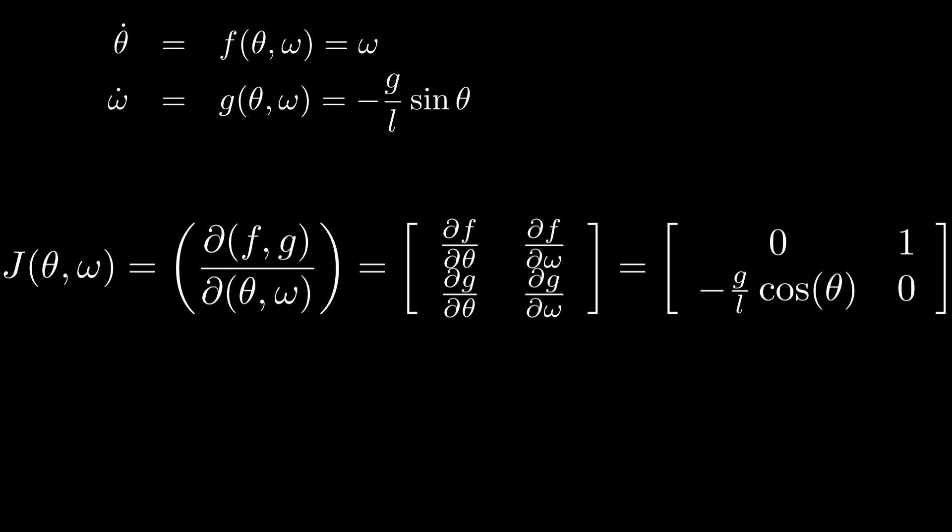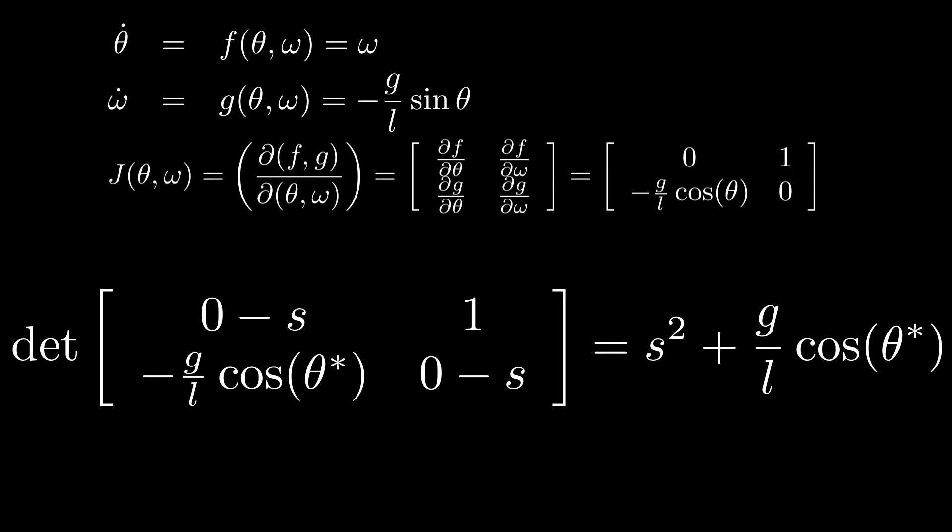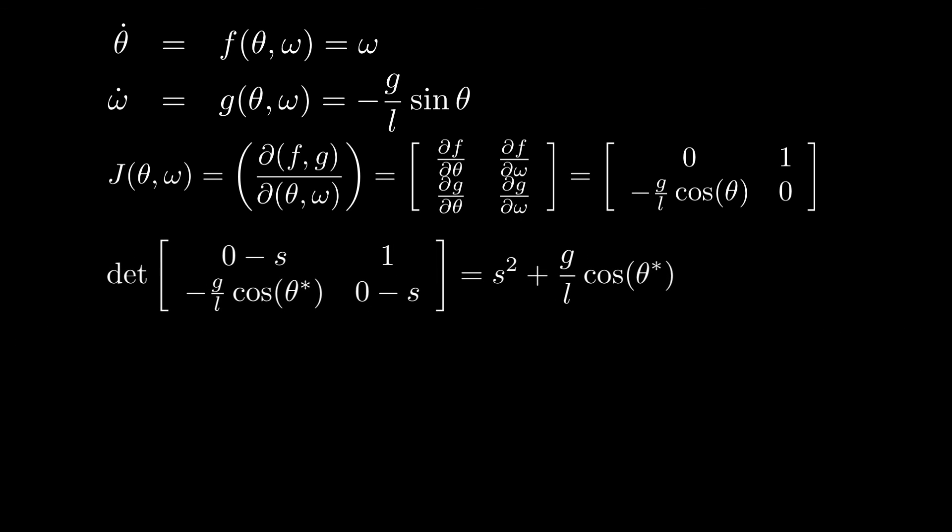That is, we need to calculate the Jacobian evaluated at a fixed point. The next step is to find the eigenvalues of this matrix at a particular theta star, which we know to be a fixed point. If we solve for the zeros of the characteristic polynomial, we see that the possible eigenvalues are plus or minus the square root of minus g divided by l times cosine theta star.